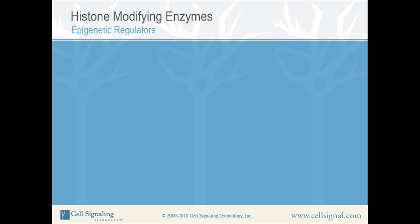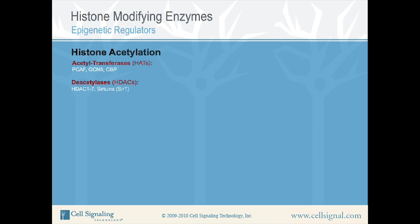Histone Modifying Enzymes. Histone modifications are carried out by a number of histone-modifying enzymes, also referred to as epigenetic regulators. For example, histone acetylation takes place through the action of acetyltransferases (HATs) such as PCAF, GCN5, and CBP. This process is reversed by histone deacetylases (HDACs) and a family of deacetylases referred to as sirtuins. Acetylation takes place on lysine residues and usually results in transcriptional activation, whereas deacetylation results in repression.